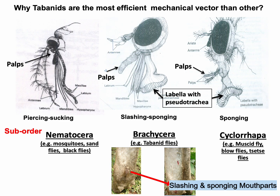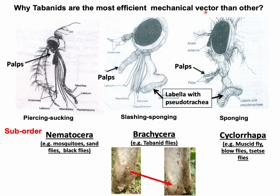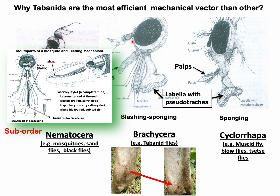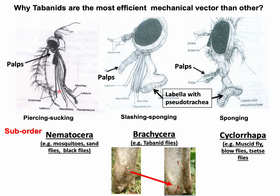Tabanid flies are the most efficient mechanical vectors in comparison to other flies. To understand why, consider the mouth part types: Nematocera have piercing and sucking mouth parts; Brachycera have lacerating and sponging mouth parts, allowing them to lacerate host tissue and sponge blood; while Cyclorrhapha cannot lacerate or penetrate the host skin and can only sponge ready-made fluid. In the mouth parts of Nematocera, pathogens cannot survive at the tip, but in Tabanid labella they can survive for a while.